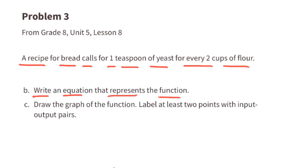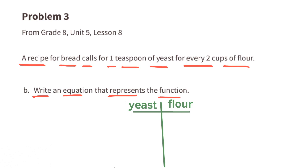B. Write an equation that represents the function. Let's start with a chart with yeast on one side and flour on the other. The information tells us for every one teaspoon of yeast, there's two cups of flour. Y represents yeast, and F represents flour. Since one is half of two, and Y equals one, and F equals two, we can say that Y equals half of F. That's if the amount of yeast is treated as a function of the amount of flour. If the amount of flour is treated as a function of the amount of yeast, then the equation is F equals 2Y.